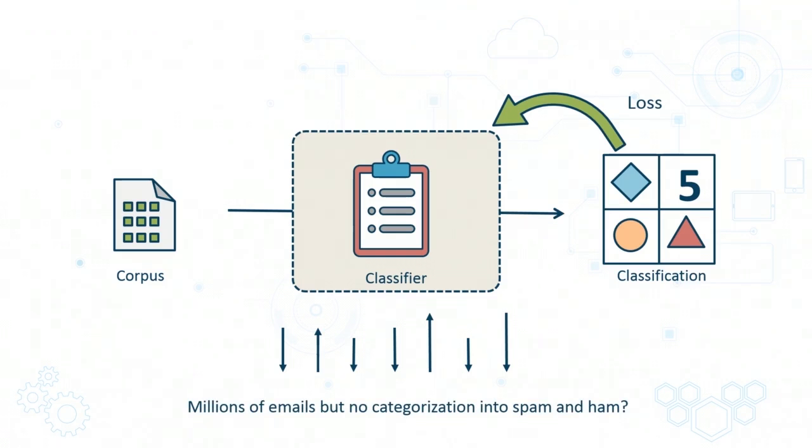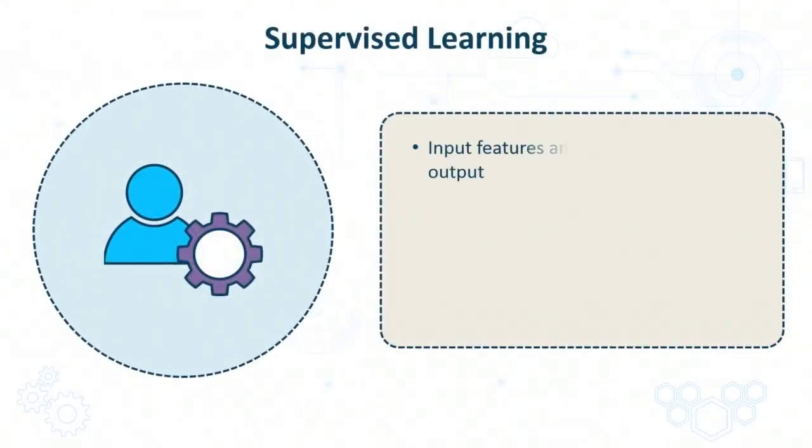The machine learning techniques which we have studied so far in this learning path, which include classification and regression, are examples of supervised learning. This is where our dataset includes not only the input features x but also labels y which correspond to those input features.